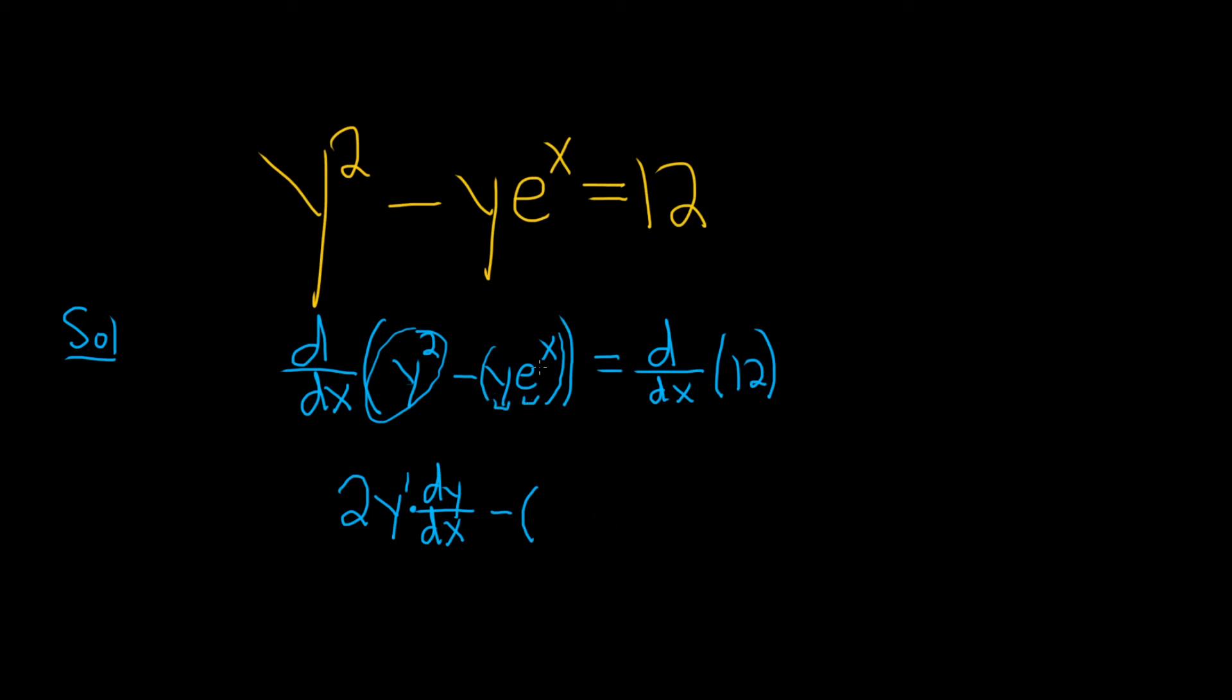The product rule says it's the derivative of the first, so dy/dx times the second, so e to the x, plus the first times the derivative of the second. And the derivative of e to the x is e to the x. And over here, the derivative of 12 is 0.